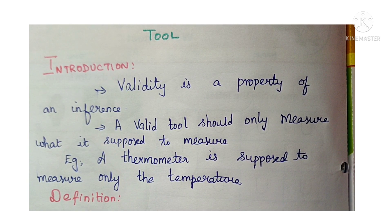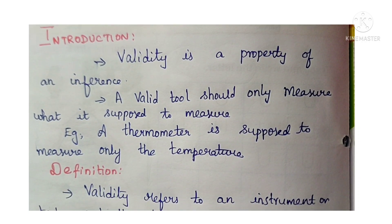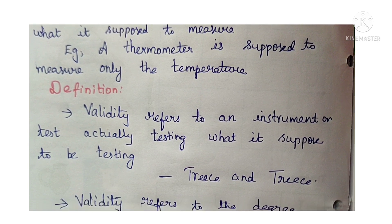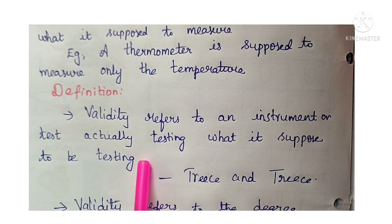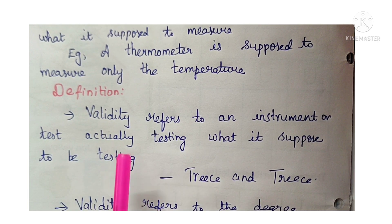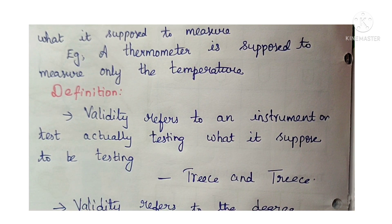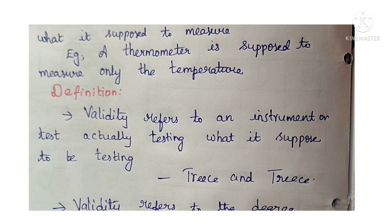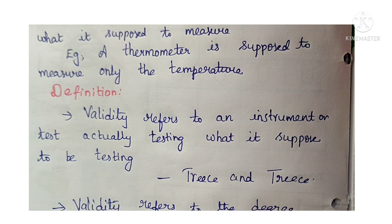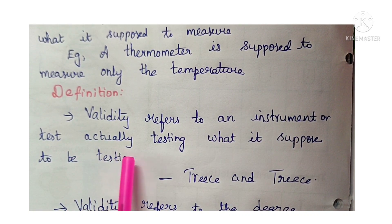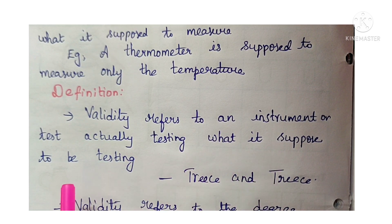Similarly, when you are taking a BP apparatus, it measures blood pressure. Moving on to the definition of validity: validity refers to an instrument or test actually testing what it is supposed to be testing. The instrument can be a questionnaire, an interview, a scale, checklist, a pain scale, or anything like that — any method of data collection.